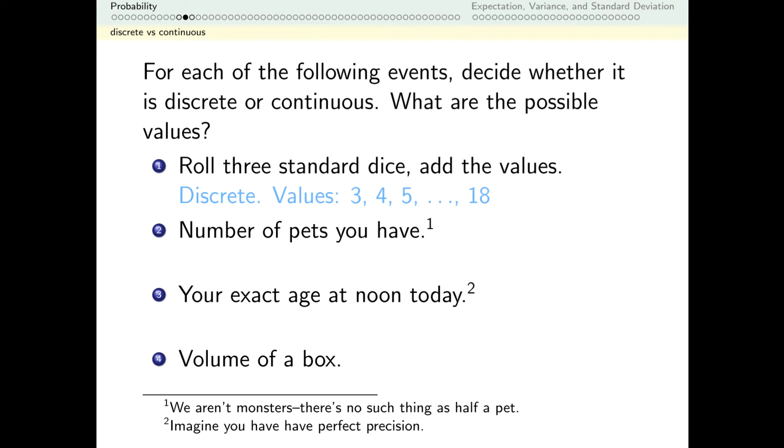Number of pets, I can have 0 pets or 1 pet or 2 pets, but nothing between 0 and 1, nothing between 1 and 2. So that's also discrete.